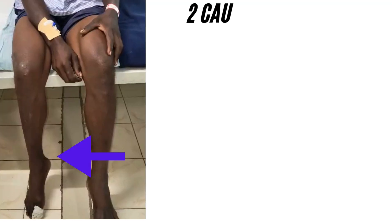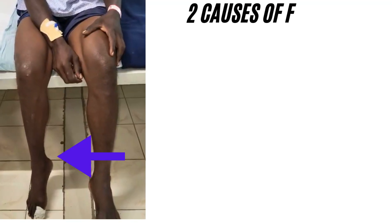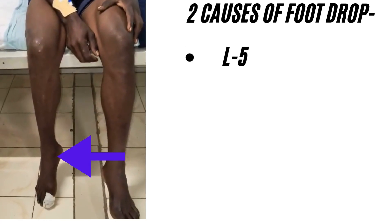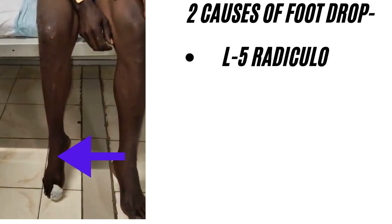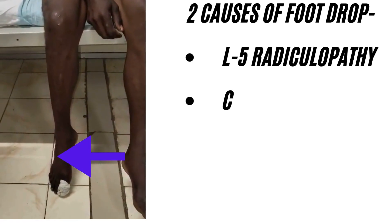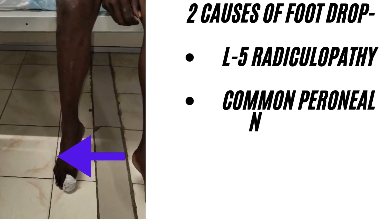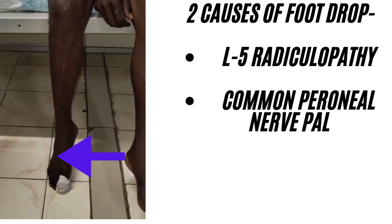Welcome to this clinical snippet video. This patient is having right-sided foot drop. There are two causes of foot drop: first is L5 radiculopathy, and second is common peroneal palsy.